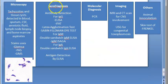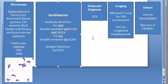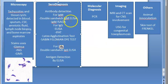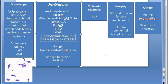For serodiagnosis you can detect antibody or antigen. For IgM detection, use double sandwich IgM ELISA or IgM ISAGA (immunosorbent agglutination assay). For IgG detection, use ELISA, indirect fluorescent antibody test, latex agglutination test, or the Sabin-Feldman dye test. For congenital toxoplasmosis in newborns, you can detect IgA using double sandwich IgA ELISA.